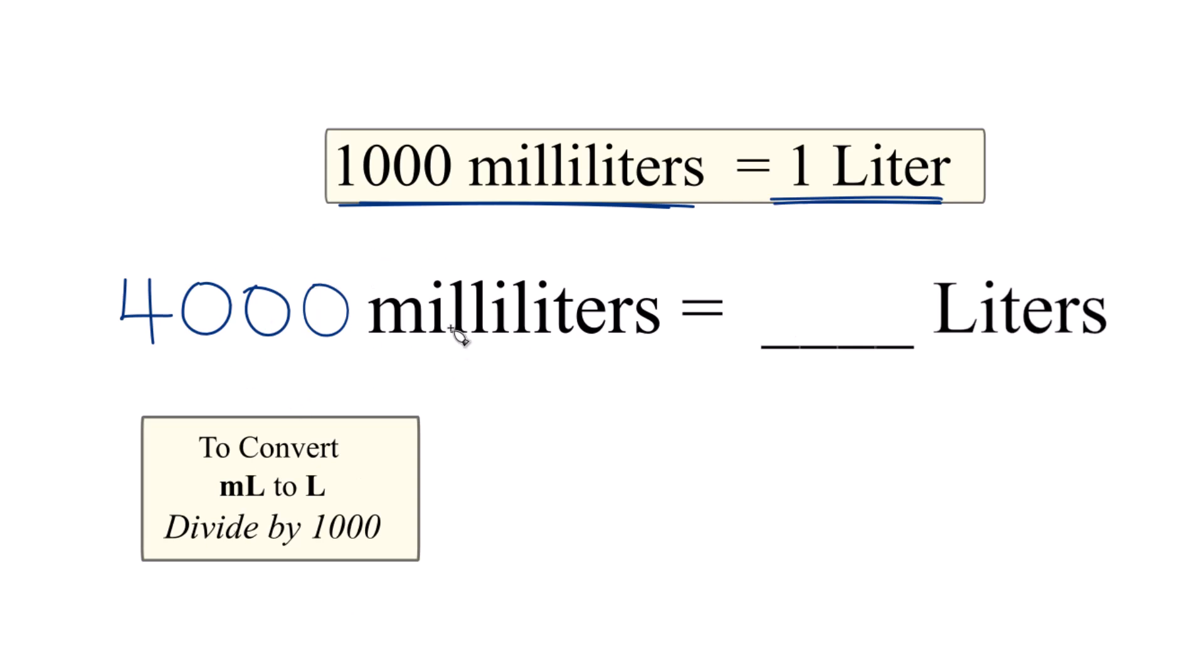So since we have 4,000 milliliters, that's going to be greater than just 1 liter. In fact, if it's 1,000 milliliters to 1 liter, 4,000 milliliters would be 4 liters. And we can work that out.